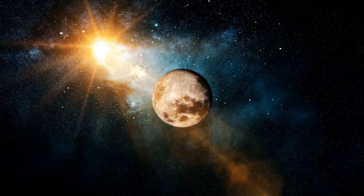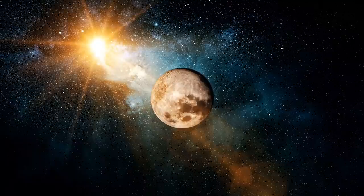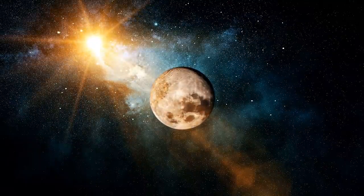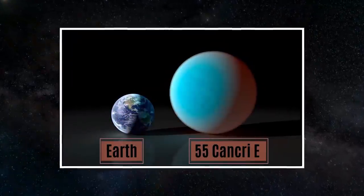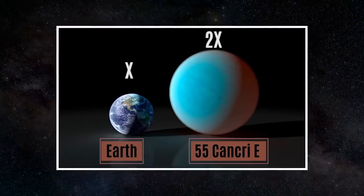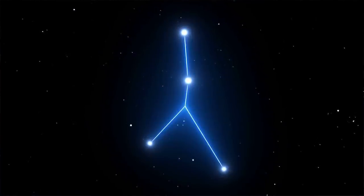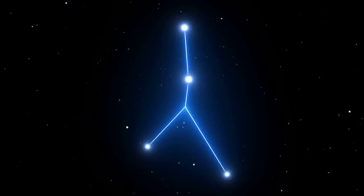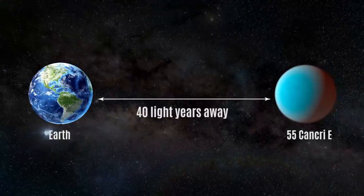At number 2 on this list is a planet that is exquisite in its nature, and probably the most expensive thing in the universe. 55 Cancri e is about twice the size of the Earth and 8 times as heavy, and is the closest to 5 planets which orbit a star in the Cancer constellation, about 40 light years from us.